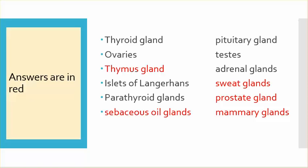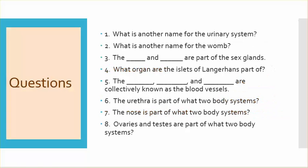The endocrine system answers are in red. The thymus gland, sweat glands, prostate gland, sebaceous oil glands, and mammary glands do not belong to the endocrine system — just because they end in 'glands' does not mean they are part of that system.